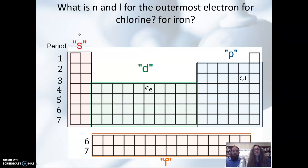Here's some practice. What is n and L for the outermost, or most energetic, highest energy electron, for chlorine and then for iron? So chlorine is over here. It's in a main group, so n equals the period. So for chlorine, n equals 3.